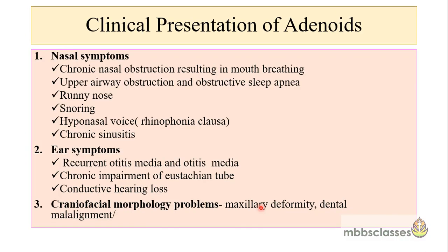The adenoids are present in the nasopharynx since birth, but not all children produce symptoms. The symptom is related to the relative ratio between the size of the adenoids and the nasopharyngeal space. A child may present with nasal symptoms, the most common being chronic nasal obstruction, due to which the child will have a problem of mouth breathing. They may also have airway obstruction or obstructive sleep apnea.